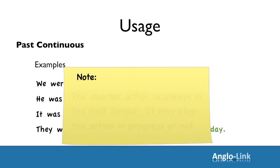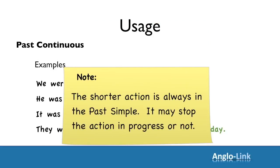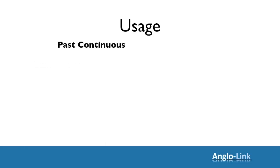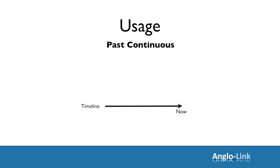They were flying to Tokyo at this time yesterday. Note that the shorter action is always in the past simple tense. This past simple action may or may not stop the action in progress. Let's look at the timeline for the past continuous tense: we were playing cards when she arrived — when another action took place in the middle of it.